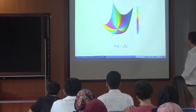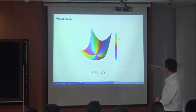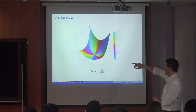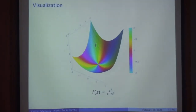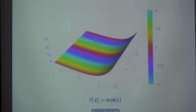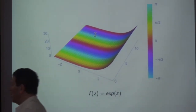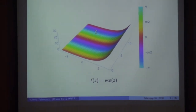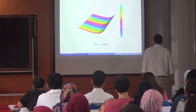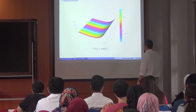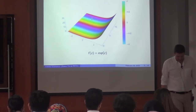Here is another picture. Around z equals zero you see the argument changing three times — that corresponds to the function z³, which vanishes at zero. For the exponential map you can see the periodicity: this is the real axis and this is the imaginary axis, and you can see that the function is periodic in the imaginary direction.